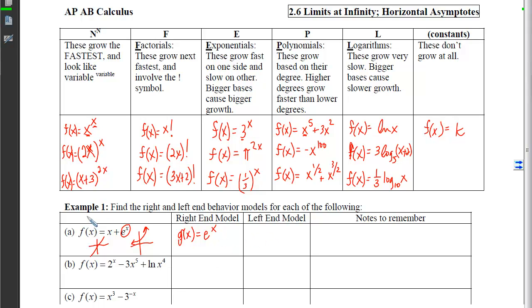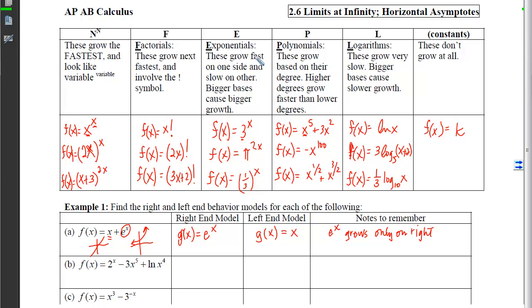Exponentials grow fast on one side and slow on the other, and because they come before polynomials in the hierarchy, they outpace any polynomial when on the growing side. But on the left-hand side, the polynomial will take over. Now for the next example with an exponential, a polynomial, and a log: since 2 is larger than 1, raising it to positive powers means 2^x grows fast on the right. So the fastest term on the right is 2^x.